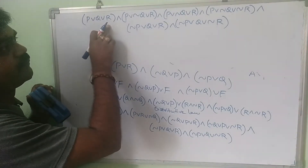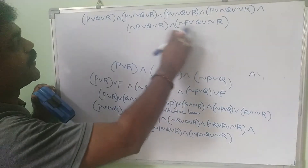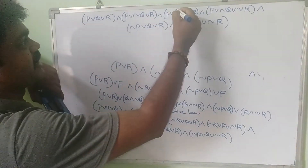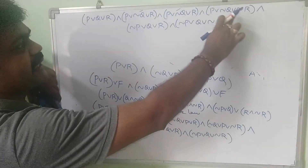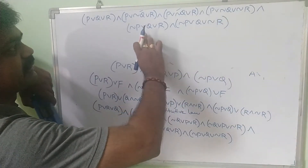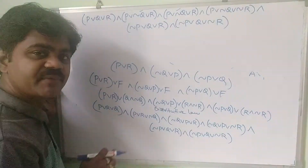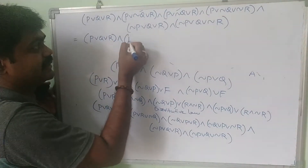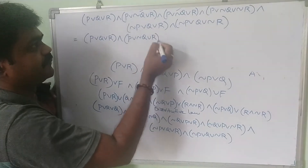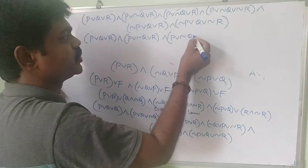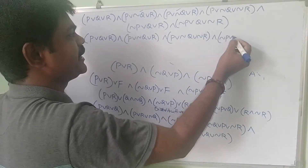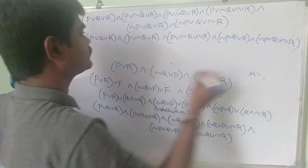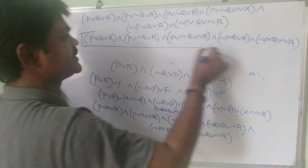Now let's check for repetitions. We have: p or q or r, p or negation q or r — which appears twice, so we write it once — p or negation q or negation r, negation p or q or r, and negation p or q or negation r. Removing the duplicate, the final PCNF is: (p or q or r) and (p or negation q or r) and (p or negation q or negation r) and (negation p or q or r) and (negation p or q or negation r).